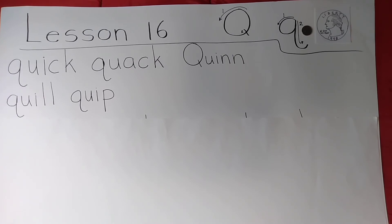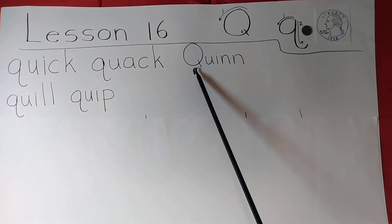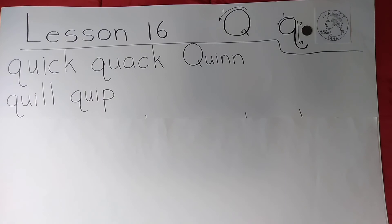Next we're going to have the spelling test. Even though there are only five words, there are still thirteen letters if you're doing the cutouts. You'll need a capital Q, a small q, a U naturally, some vowels, a couple of N's, a couple of L's — thirteen total that you'll need all together, so you'll have to do some rounding up. Use pause.